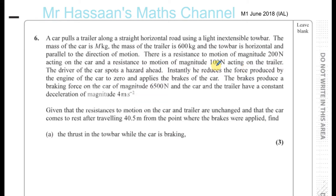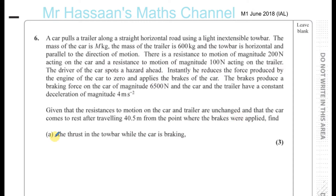The driver spots a hazard ahead and instantly reduces the engine force to zero, applying the brakes. The brakes produce a braking force of 6500 newtons on the car, and the car and trailer have a constant deceleration of 4 metres per second squared. The car comes to rest after travelling 40.5 metres from where the brakes were applied. We need to find the thrust in the tow bar while braking.